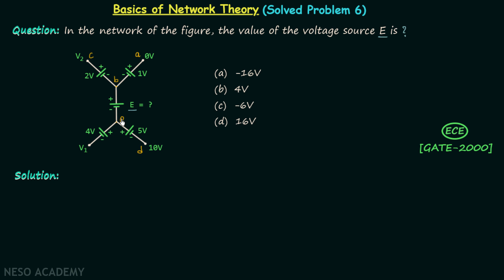This point here is point E and this one here is point F. In order to calculate the voltage E, I will apply KVL starting from point A and ending at point D.